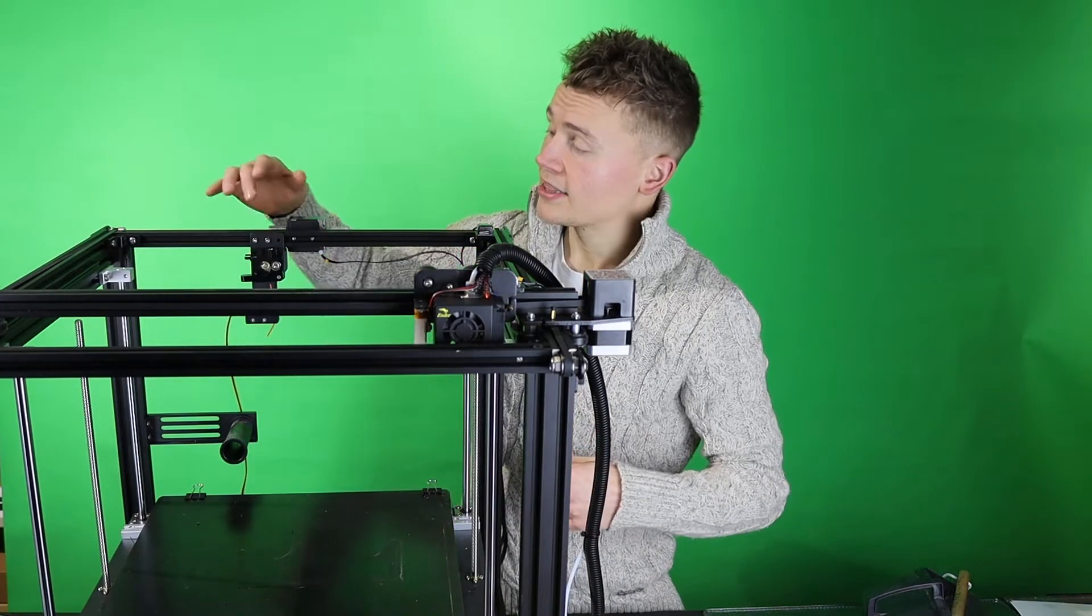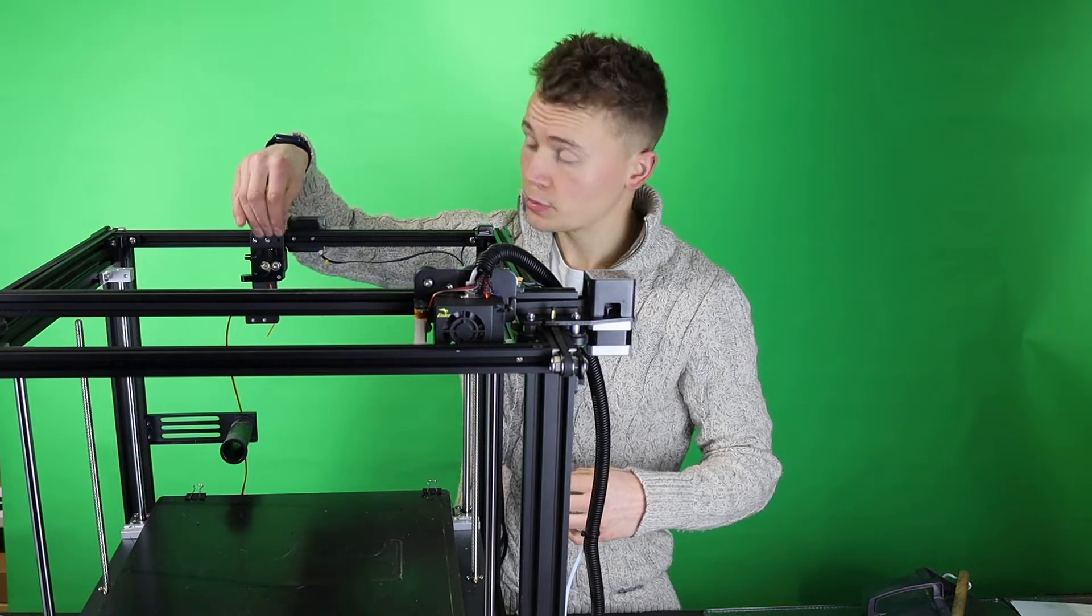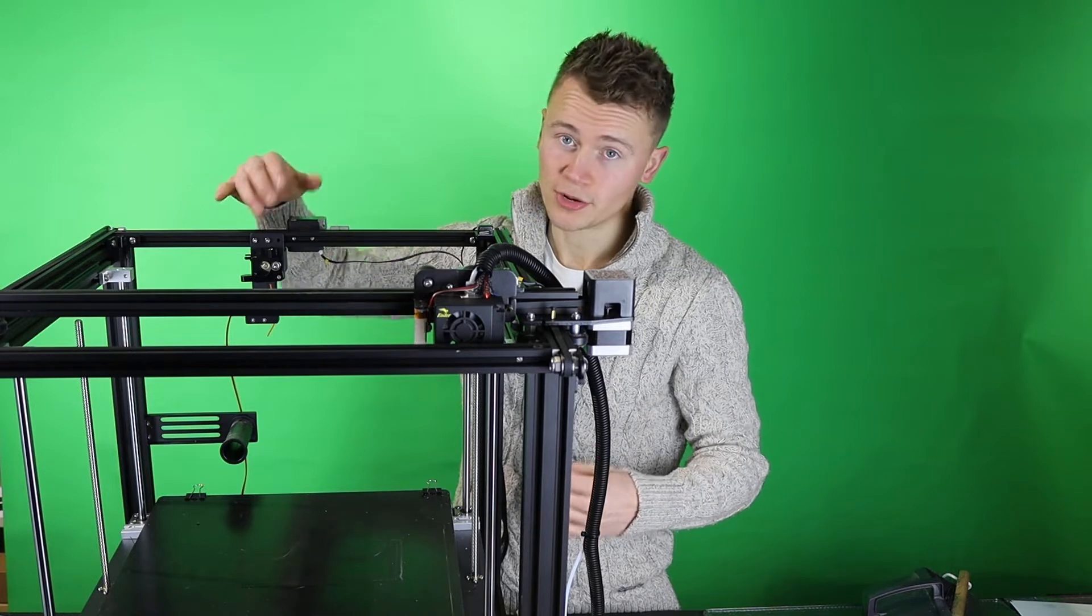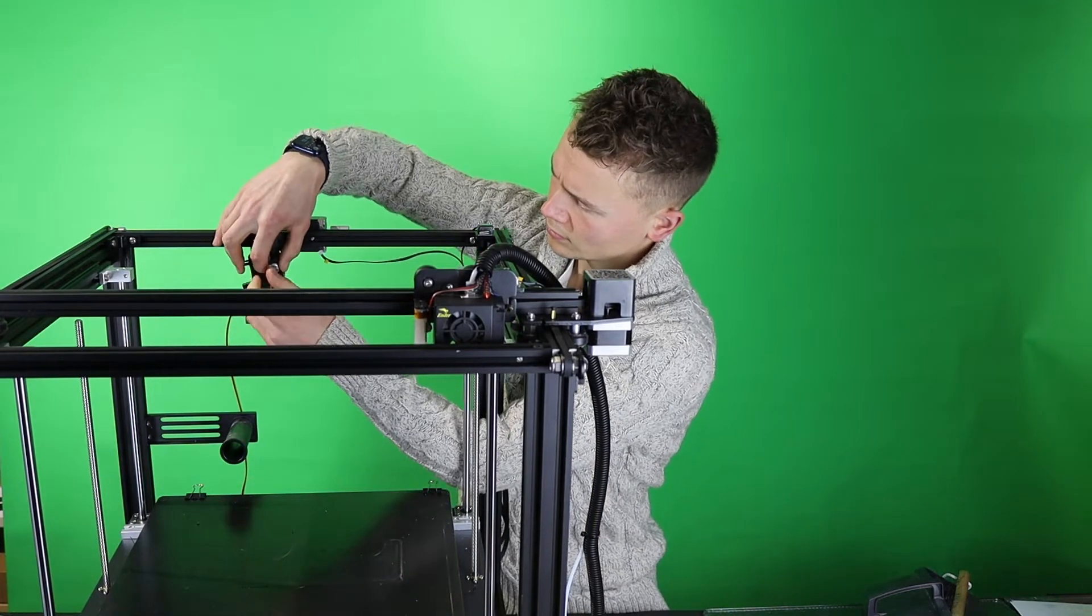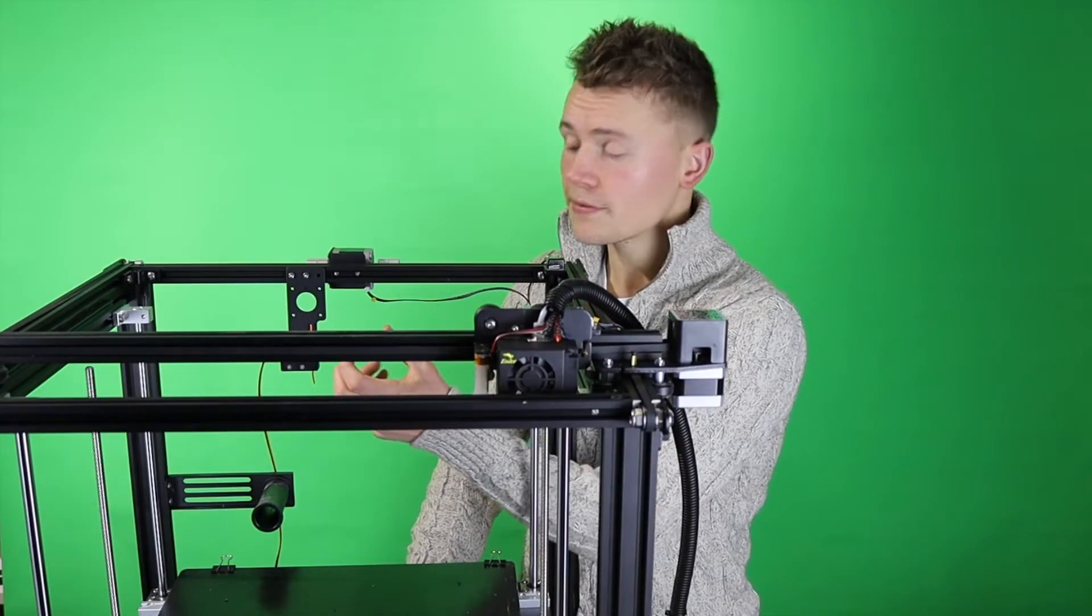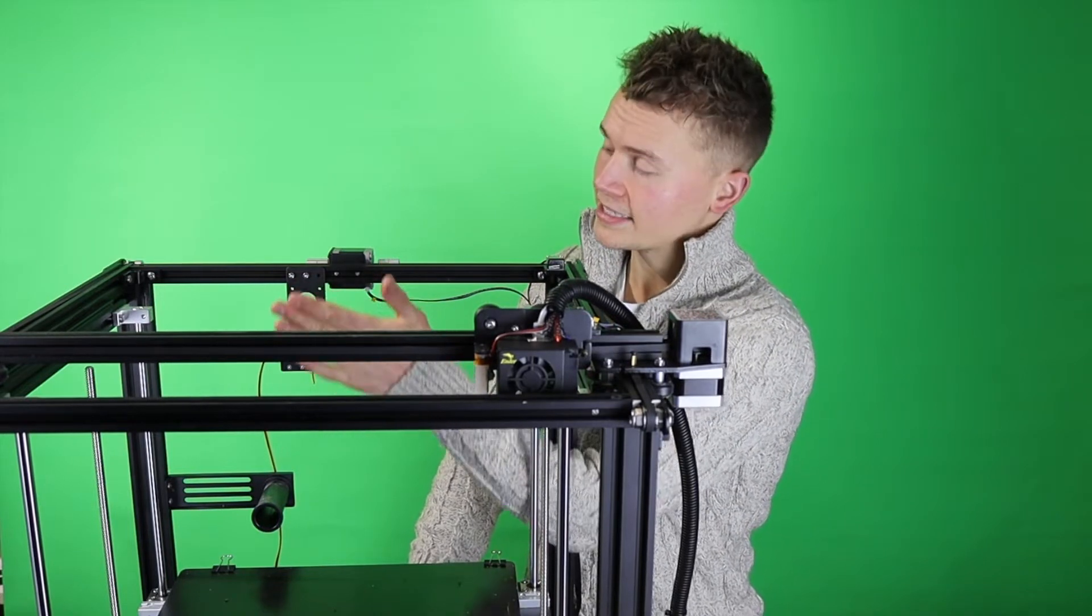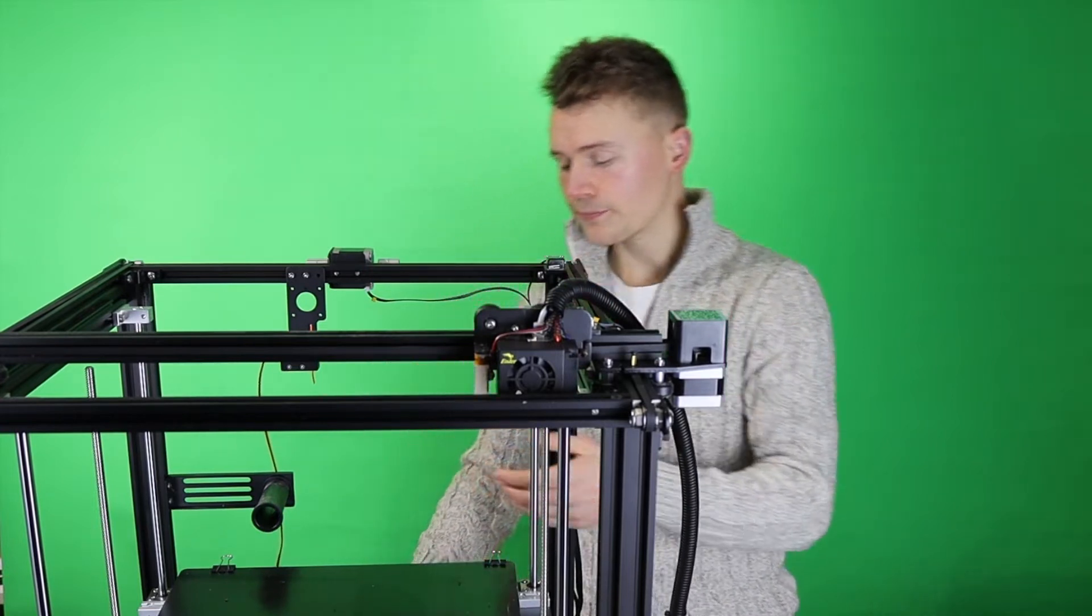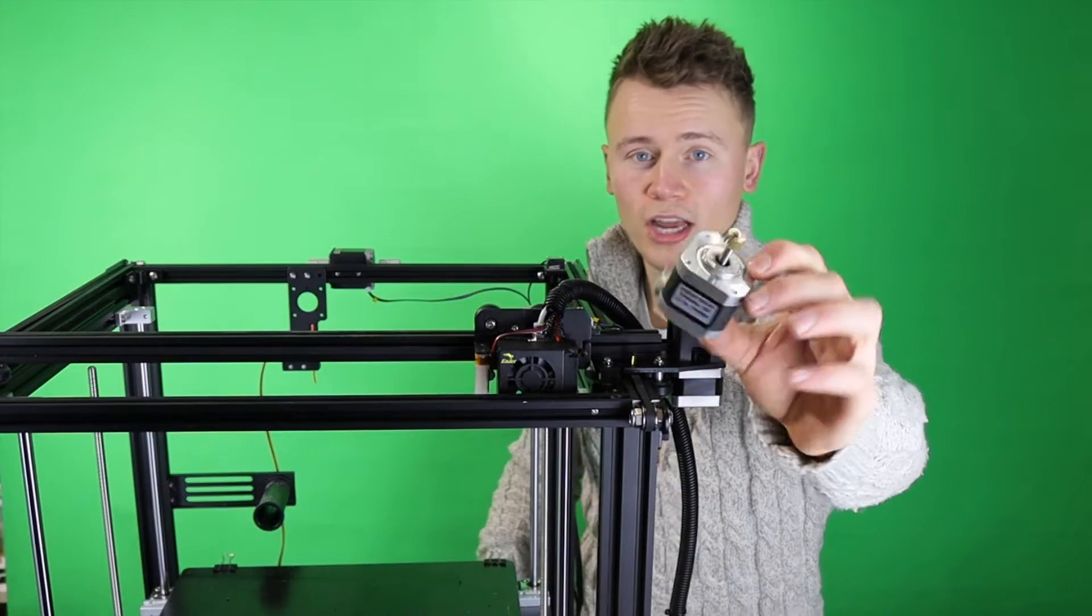I've already done this but you will also have to detach the Bowden tube that is attached to the drive gear ready to put into the new drive gear when you install it. So when you've removed the stock drive gear, you will have the metal back plates and the filament run-out sensor still there in place and your stepper motor will look like this.